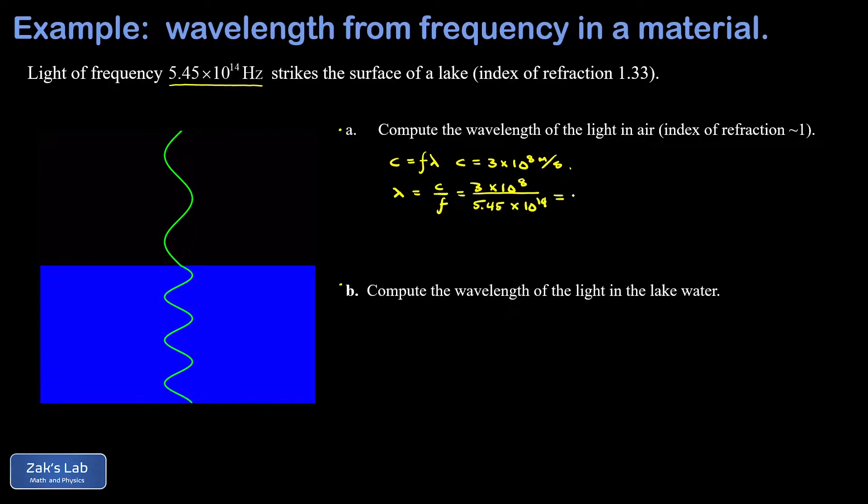When we run the numbers, we get 5.50 times 10 to the negative 7 meters. As a matter of convention, it's best to express this in nanometers, that's 10 to the negative 9 meters. So we divide 100 out of the power of 10 and multiply the coefficient by a factor of 100, getting 550 nanometers.